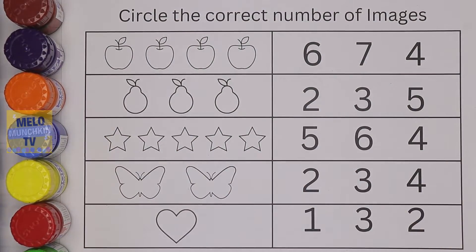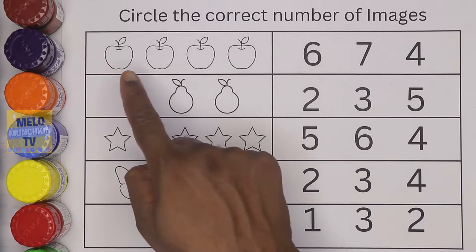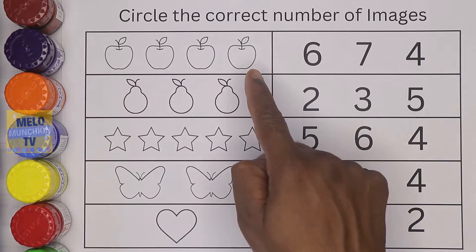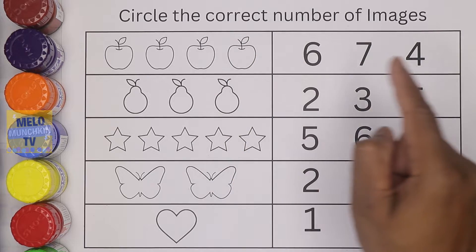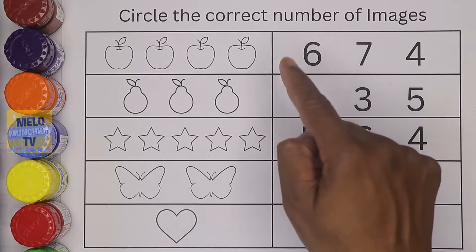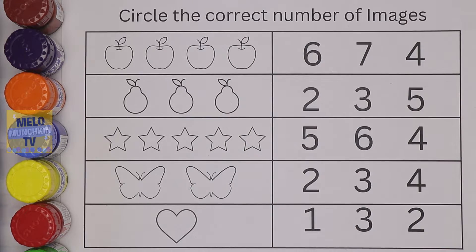Hello kids! Today in this video we are going to learn numbers. We need to circle the correct numbers of images. We will color the objects, see how many objects there are, and then circle the number. Let's get started! First, I'll take red color.